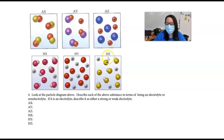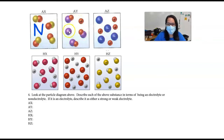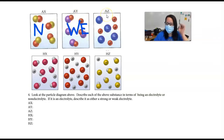Now let's look at each of these particle diagrams and describe whether it's an electrolyte or non-electrolyte, and if it is an electrolyte, whether it's strong or weak. If you look at the AX box, we have all molecules — no positives or negatives — so this is going to be a non-electrolyte. For the next one, we have three molecules without charges, but one positive and one negative, so this is going to be a weak electrolyte. For the third one, it's all positive and negative ions with no molecules, so this is going to be a strong electrolyte.